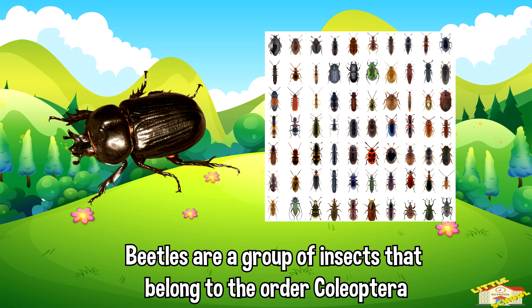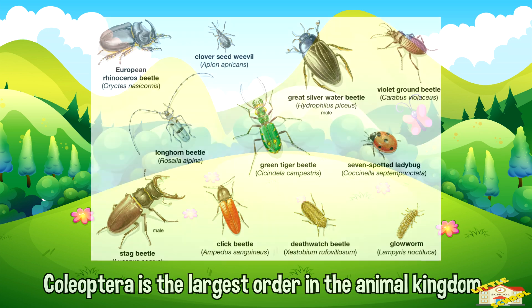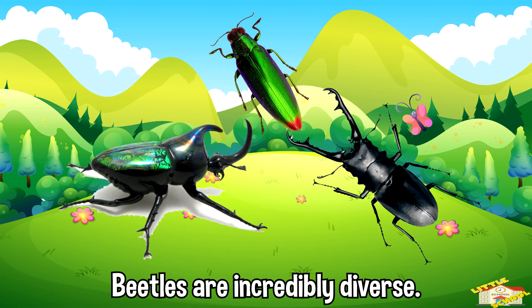Beetles are a group of insects that belong to the order Coleoptera. Coleoptera is the largest order in the animal kingdom, comprising about 400,000 described species. Beetles are incredibly diverse, found in almost every habitat on earth.